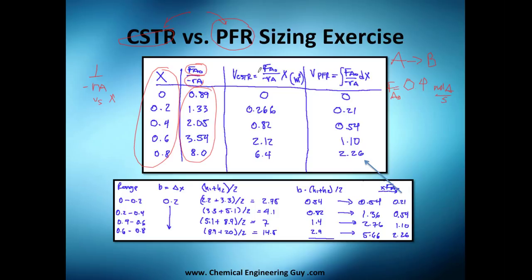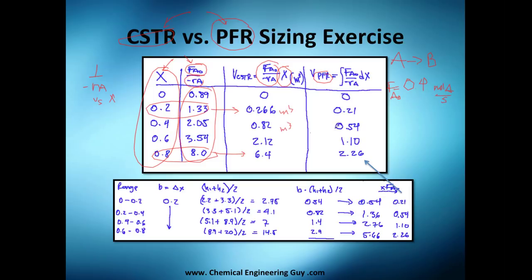Now I'm going to calculate the volumes for the CSTR and the volumes for the PFR. The CSTR volumes are very easy because they are done algebraically. I got this value and this value for each conversion level, and I multiplied them out to get the CSTR volumes.